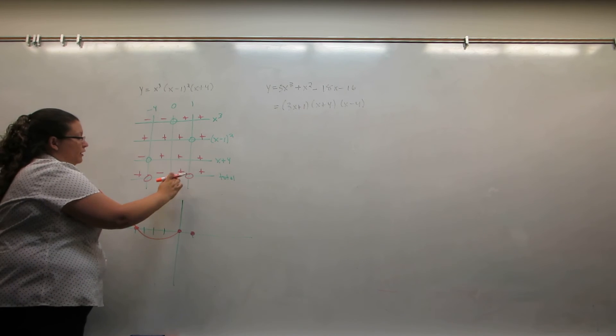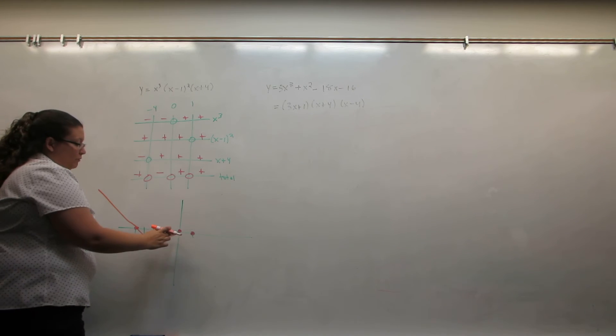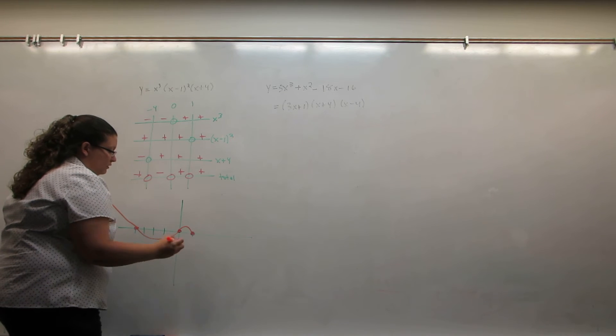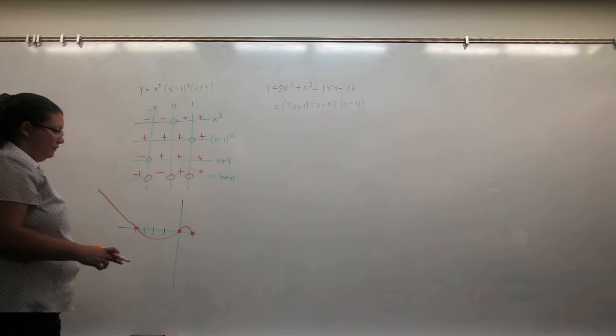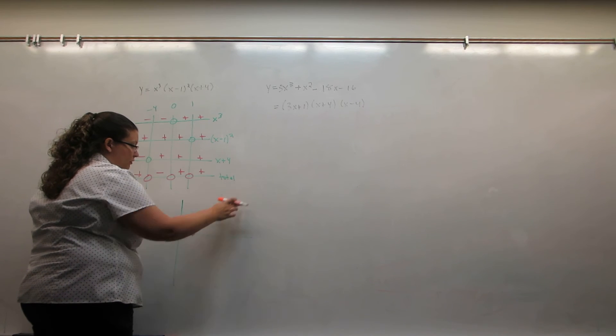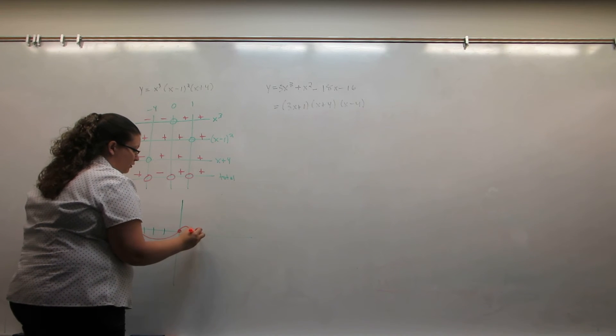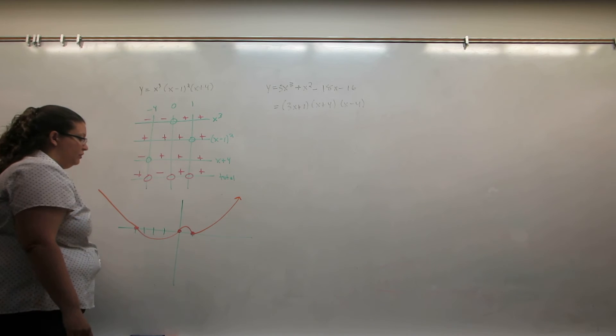Between zero and one, the graph is positive. It must start here and end here. So it must look like that. And then after one, the graph is also positive. It must start here, so it either goes up or down. And the only way it can do that and be positive is to go back up.